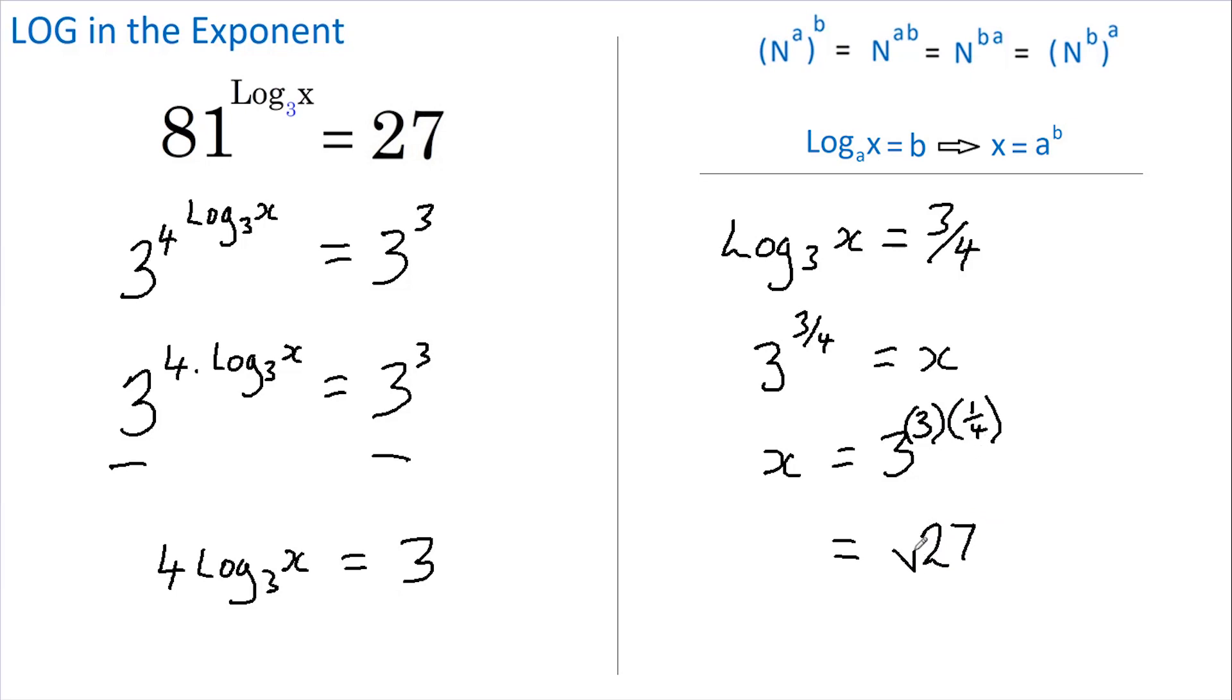And a quarter just means the fourth root, so x equals the fourth root of 27. And that's the answer. Did you get it?